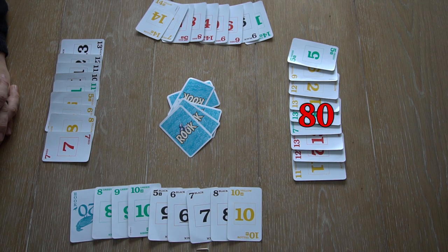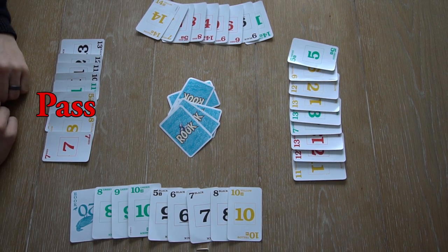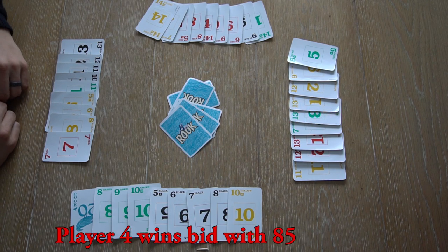Player 2 bids 80. Player 4 bids 85. And at this point, player 1, 3, and 2 decide to pass. Player 4 wins the bid.